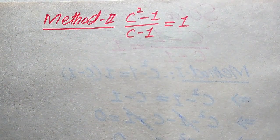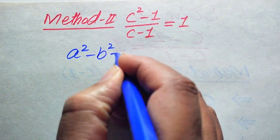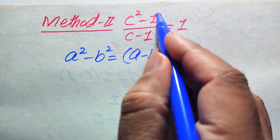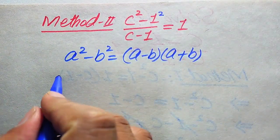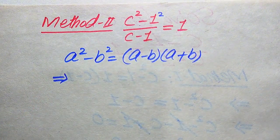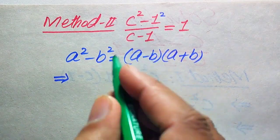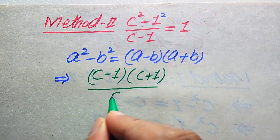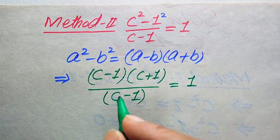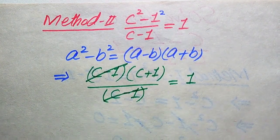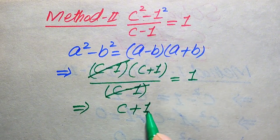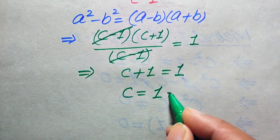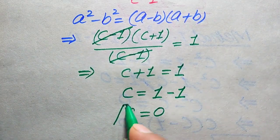In Method 2, we use the algebraic identity: a² - b² = (a - b)(a + b). We rewrite 1 as 1², so the numerator c² - 1 factors as (c - 1)(c + 1). The equation becomes (c - 1)(c + 1) / (c - 1) = 1. The (c - 1) terms cancel, giving c + 1 = 1, so c = 1 - 1 = 0.